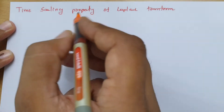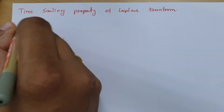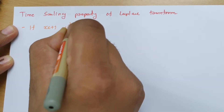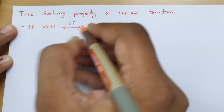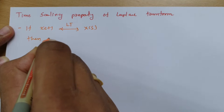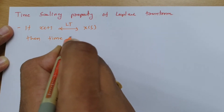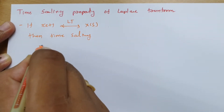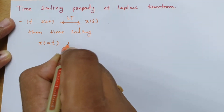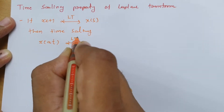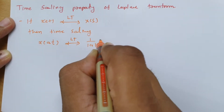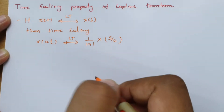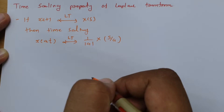So let us define time scaling property. If we have signal x(t) and the Laplace transform of that signal is X(s), then time scaling gives us x(at), and the Laplace transform of that is 1/a · X(s/a). So this is the time scaling property of Laplace transform.